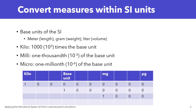Here we can see that 1 milligram also equals 1,000 micrograms. I also wanted to point out that there are more prefixes than those I mentioned, but these are the most commonly used — kilo, milli, and micro. You will see these a lot in pharmaceutical calculations.